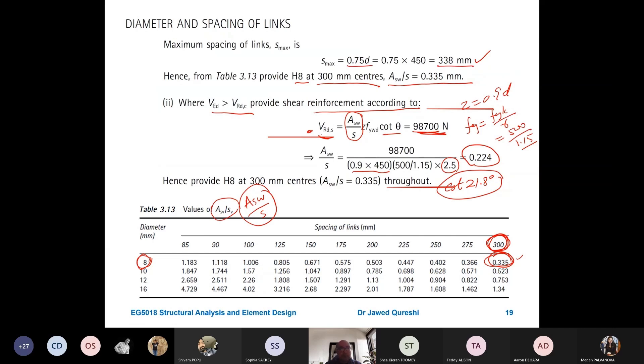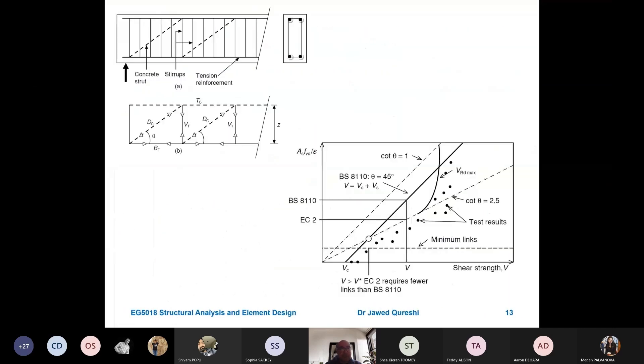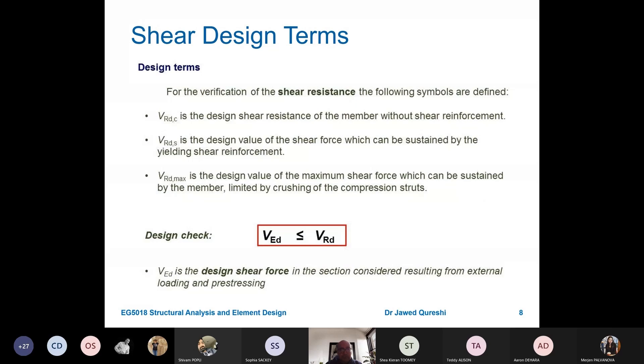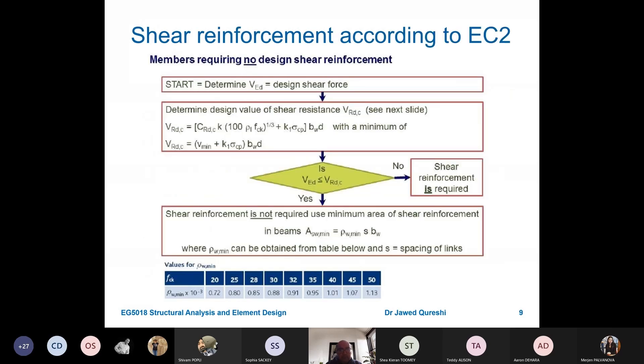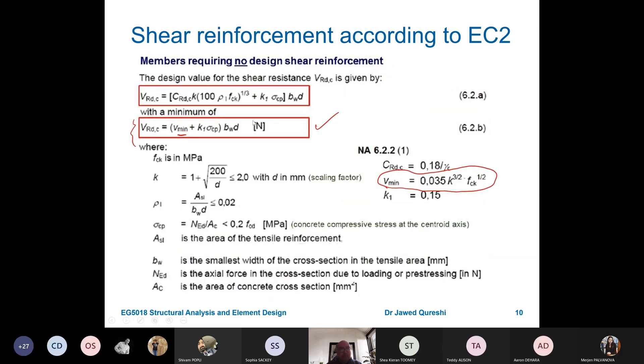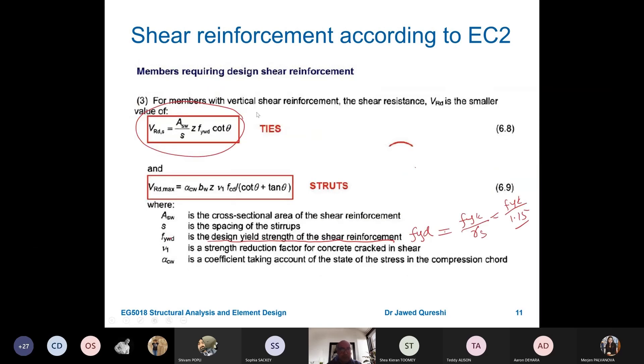So, the way design for shear in beam works is that VED should be less than VRD. We actually find out the capacity of compression strut. If applied shear is less than compression strut, then we just provide minimum reinforcement. If this condition is not satisfied, then shear is required. For these two conditions, we have this formula. When shear is not required, we use this formula. When shear is required, we use these two formula. And then we use this table as well to work out AS over S.